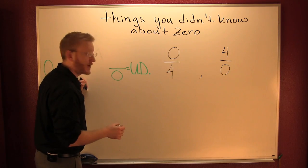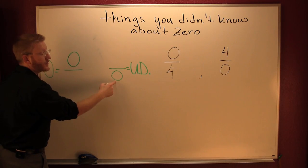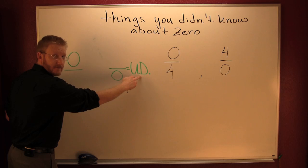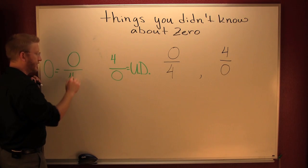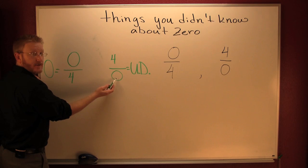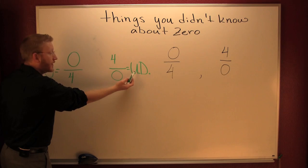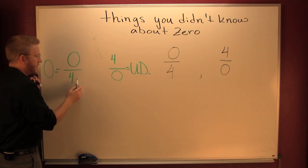When zero's on top, it's zero. When zero's in the denominator, that's undefined. It doesn't matter what's in the numerator — when you divide by zero, that's undefined. You can never divide by zero. But when zero's on top, it's zero.